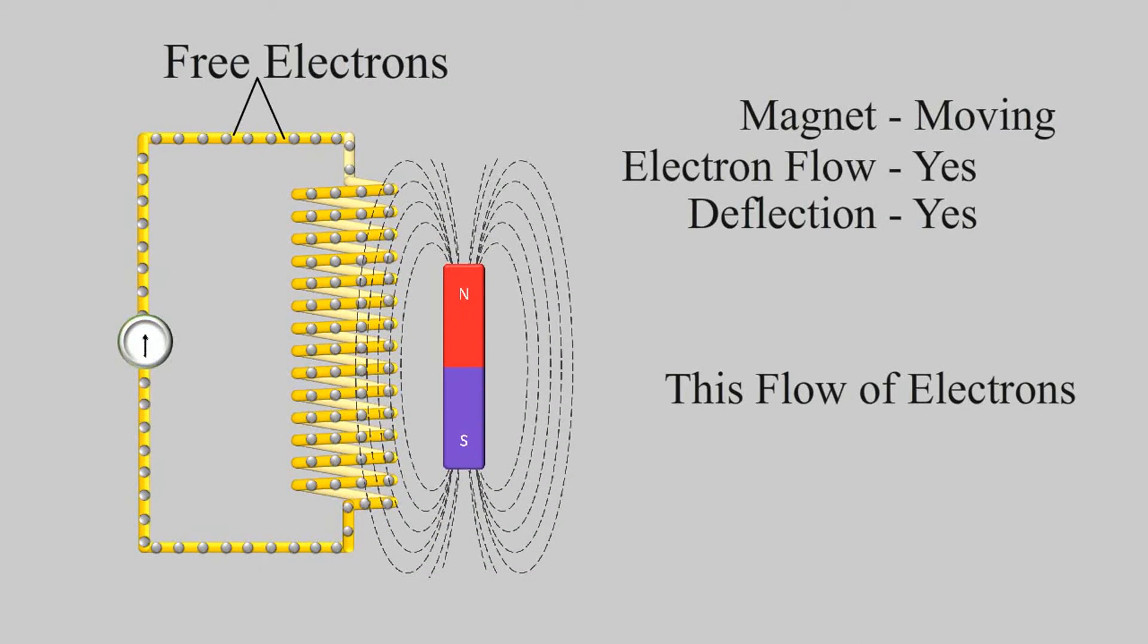This directional flow of electrons is what we call electricity. So to induce electricity changing magnetic field is mandatory.